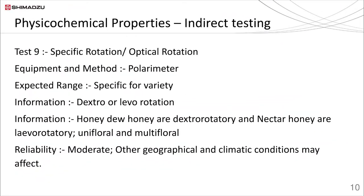Sugars being a major constituent in honey, an optical rotation measurement can give very good information about qualitative differences in honey varieties. For example, honeydew honey shows dextro rotation while nectar honey shows levo rotation. The change in degree of rotation can also help give better information about the botanical source of honey or blends. This is an additional test with no specific regulation, performed using a simple polarimeter to measure optical rotation.